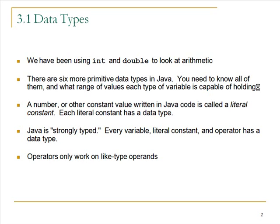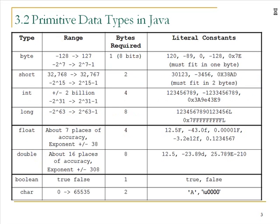Operators only work on like-type operands. So if you have an int plus an int, then you're okay — you have two like-type operands. If you have an int plus a double, then you have a mixed type expression, and something has to happen before the plus sign will work. There's a lot of data on this screen, so this slide is going to be one of your reference points. On the left-hand column, we have the eight primitive data types in Java. The first four data types are all integer data types: byte, short, int, and long.